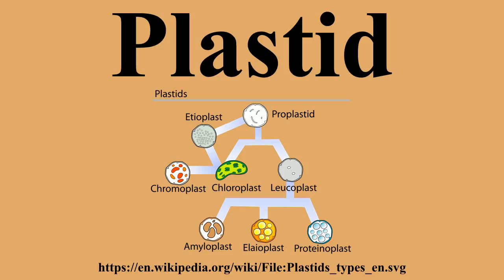The plastid contains about 100 genes encoding ribosomal and transfer ribonucleic acids, as well as proteins involved in photosynthesis and plastid gene transcription and translation.